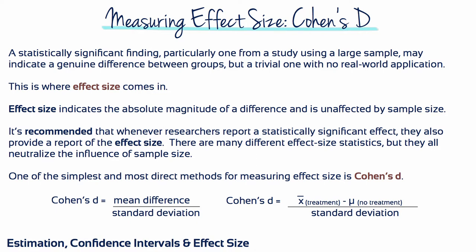A statistically significant finding, particularly one from a study using a large sample, may indicate a genuine difference between groups, but a trivial one with no real-world application. This is where effect size comes in. Effect size indicates the absolute magnitude of a difference and is unaffected by sample size. It's recommended that whenever researchers report a statistically significant effect, they also provide a report of the effect size. There are many different effect size statistics, but they all neutralise the influence of sample size.